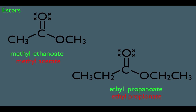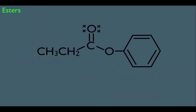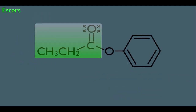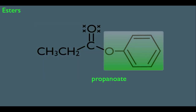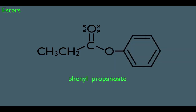To make sure you got this, let's look at another example. Starting with the carbonyl side of the ester, we would call this side propanoate. Then we look at the carboxyl side on the right. When a benzene ring is a substituent, we call it phenyl. So the carboxyl oxygen has a phenyl, meaning we would call this molecule phenyl propanoate. The common name would be phenyl propionate.